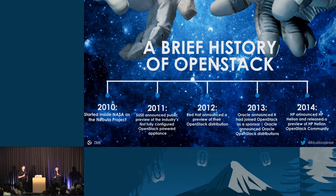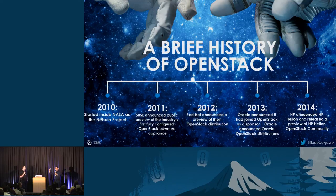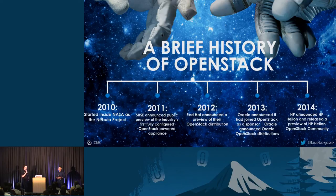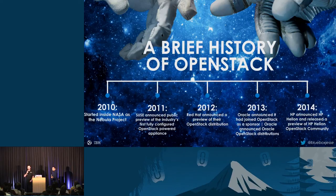Also in 2012, Red Hat introduced their OpenStack distribution. In 2013 Oracle became a sponsor, and 2014 Helion was announced. As of 2015 we have over 3,900 developers and about 31,000 members in the OpenStack Foundation community. You can see from very early on, this open source project had a pretty good community contributing and very quickly grew.